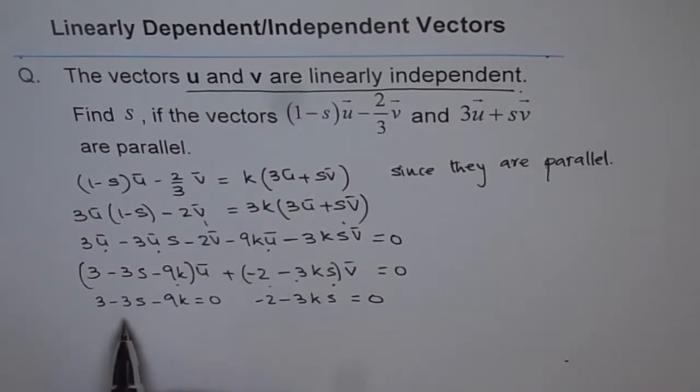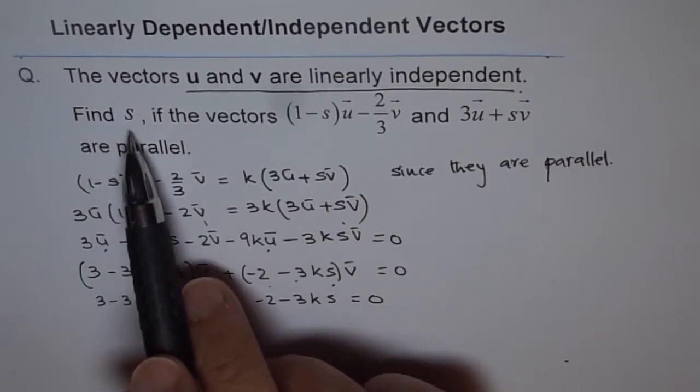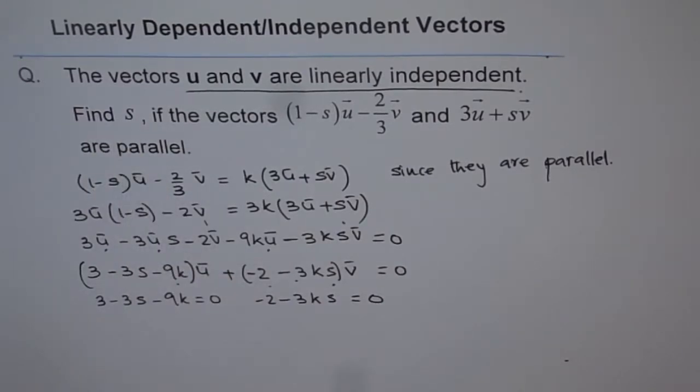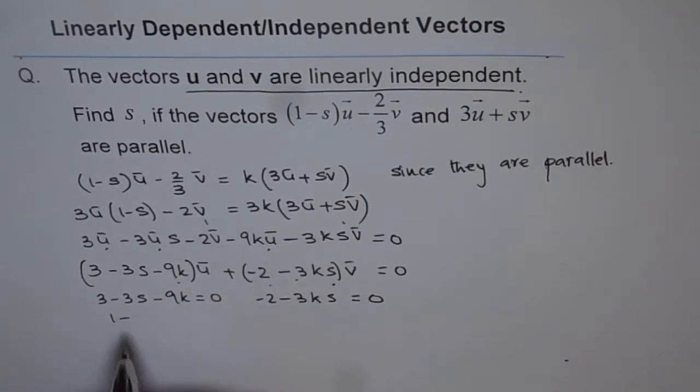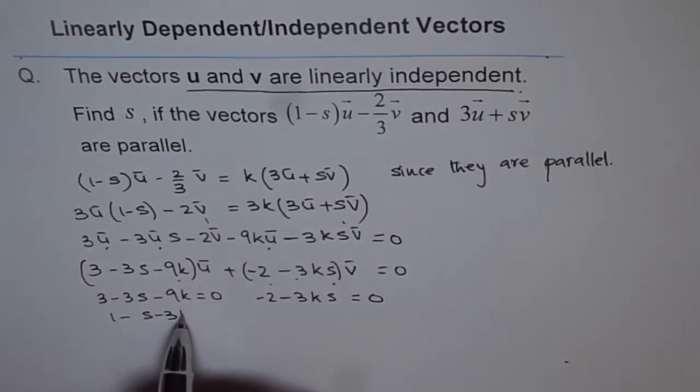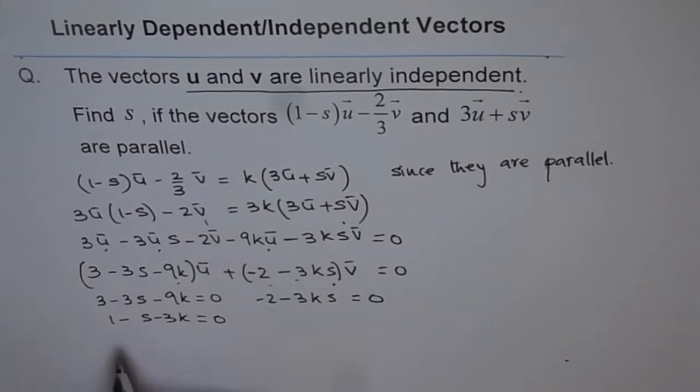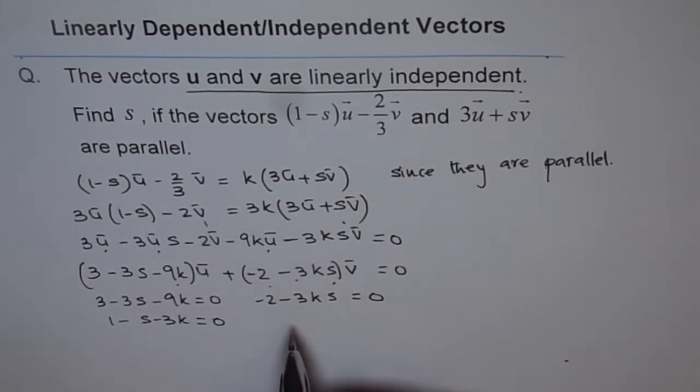Now, what we can do is, we can find the value of s. We have to find the value of s to get the answer. So, from here, we can calculate what s is. If I divide everything by 3, I get 1 - s - 3k equals to 0.